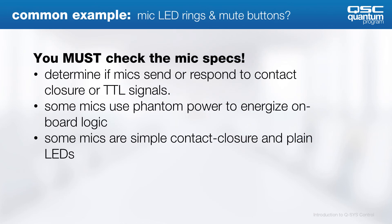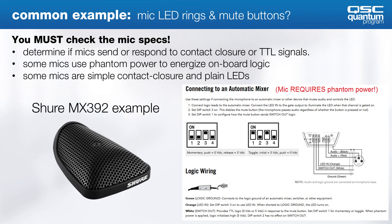The most common GPIO application is to connect them to microphone LEDs and mute buttons. Every microphone model is slightly different, so it's important to identify if the microphone responds to a contact closure or if a TTL signal is required. Also, some microphones will use phantom power and provide a voltage for LEDs on their own, while others will not. For example, the Shure MX392 has a dip switch setting that can configure whether it's going to be a momentary or toggle mute button. You also have a simple LED operation control.